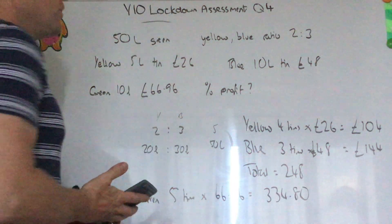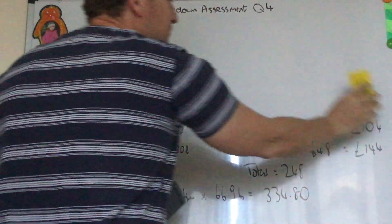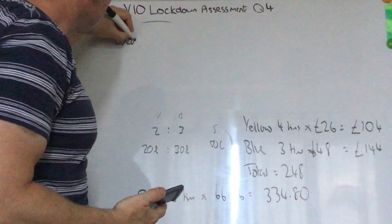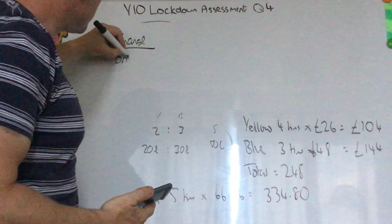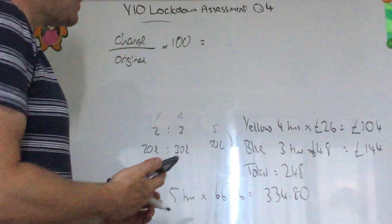Now we want to work out the percentage profit. It's the same as percentage change. It's a simple formula. It's change over original times 100. So what's it changed by? Well it's gone from £248 to £334.80.